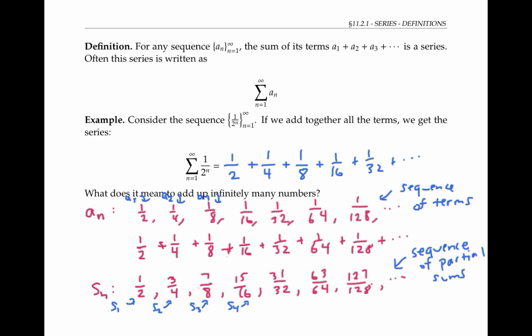Although I can't physically add up infinitely many numbers, I can observe that as I add up more and more numbers, my partial sums are approaching the number one. That is, the limit as n goes to infinity of the nth partial sum is equal to one. So it makes sense that if I could add up all infinitely many numbers, I should get an exact sum of one — the sum of this infinite series is one.